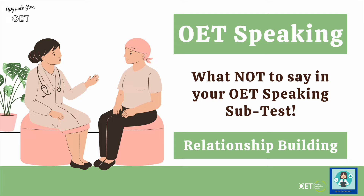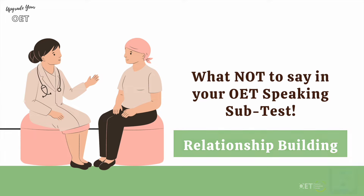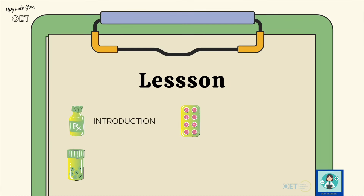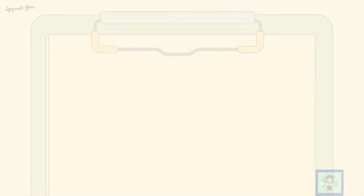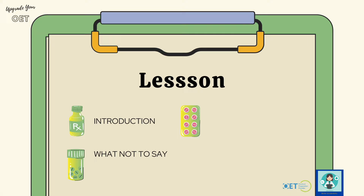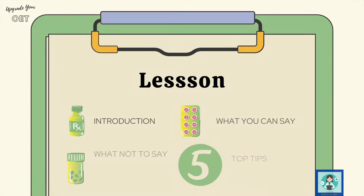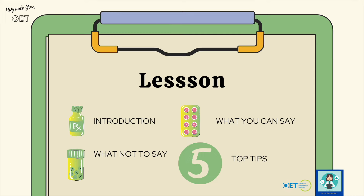I'm sure you've been wondering if there's anything that you shouldn't say in your OET speaking subtest. Let's take a look together and we'll focus in on relationship building. We'll have a quick introduction to the criteria, go over some things you really shouldn't be saying and some things you can say. I'm also going to give you my five top tips to score well in the relationship building criterion of your OET speaking subtest.